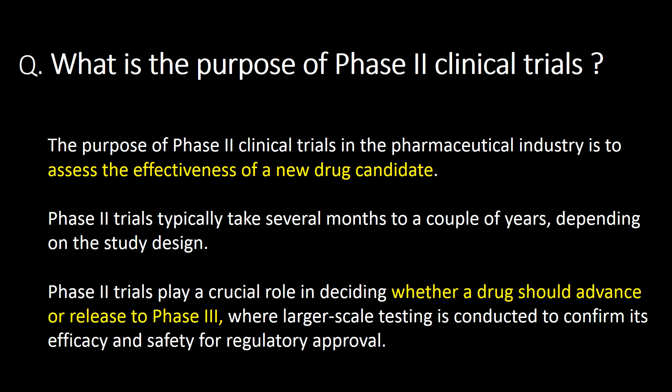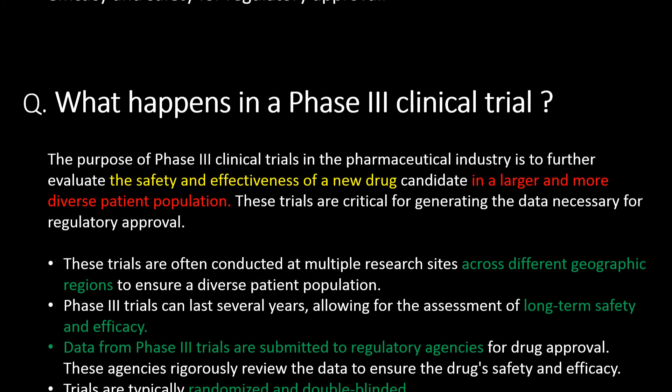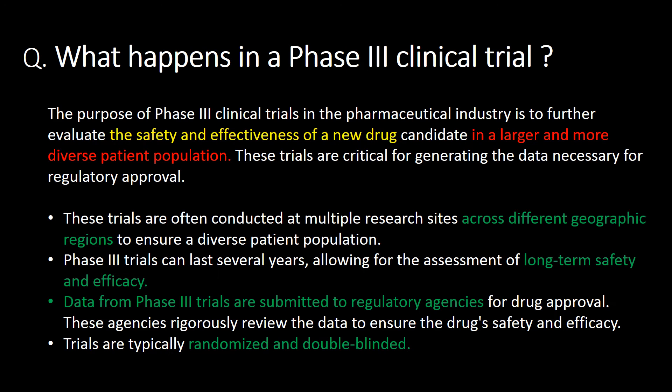What is the purpose of Phase 2 clinical trials? The purpose of Phase 2 clinical trials in the pharmaceutical industry is to assess the effectiveness of a new drug candidate. Phase 2 trials typically take several months to a couple of years depending on the study design. Phase 2 trials play a crucial role in deciding whether the drug should advance to Phase 3, where larger-scale testing is conducted to confirm its efficacy and safety for regulatory approval.